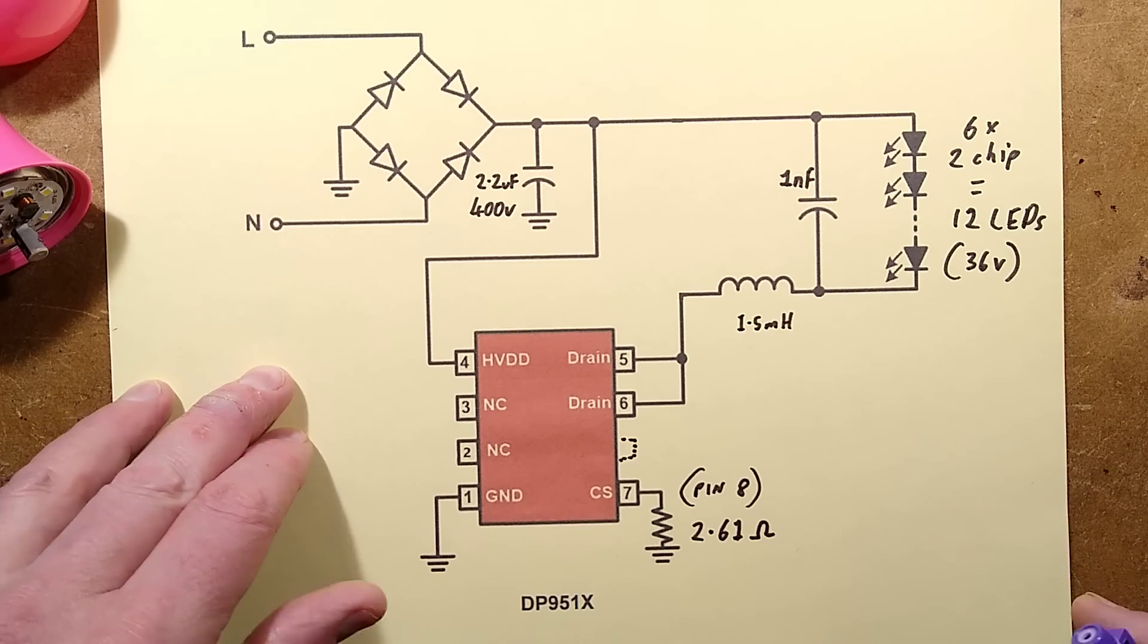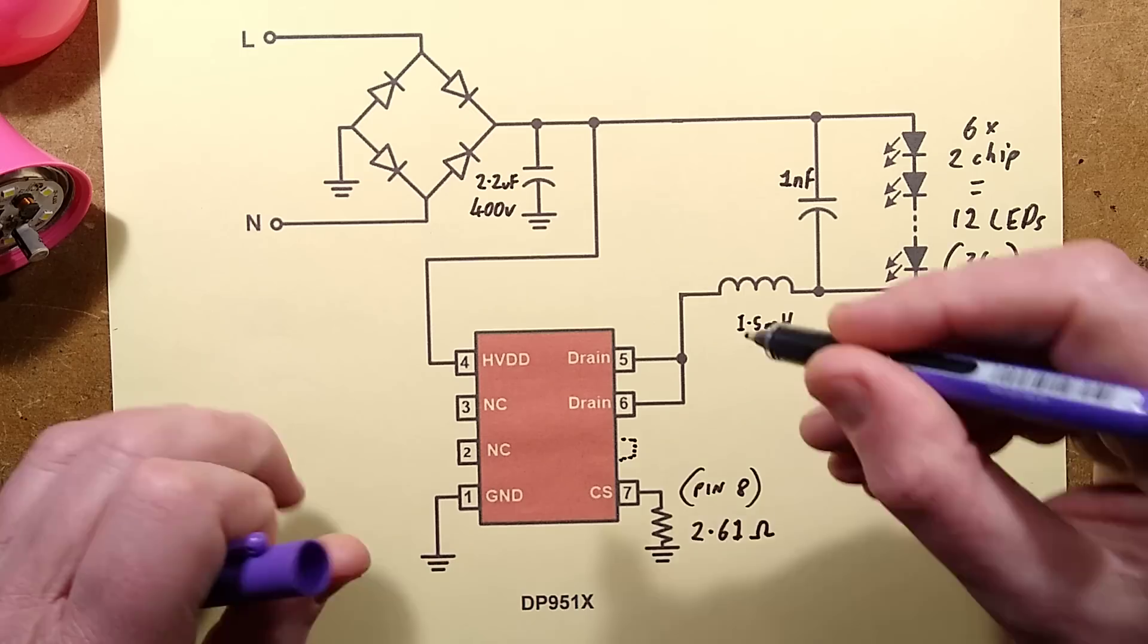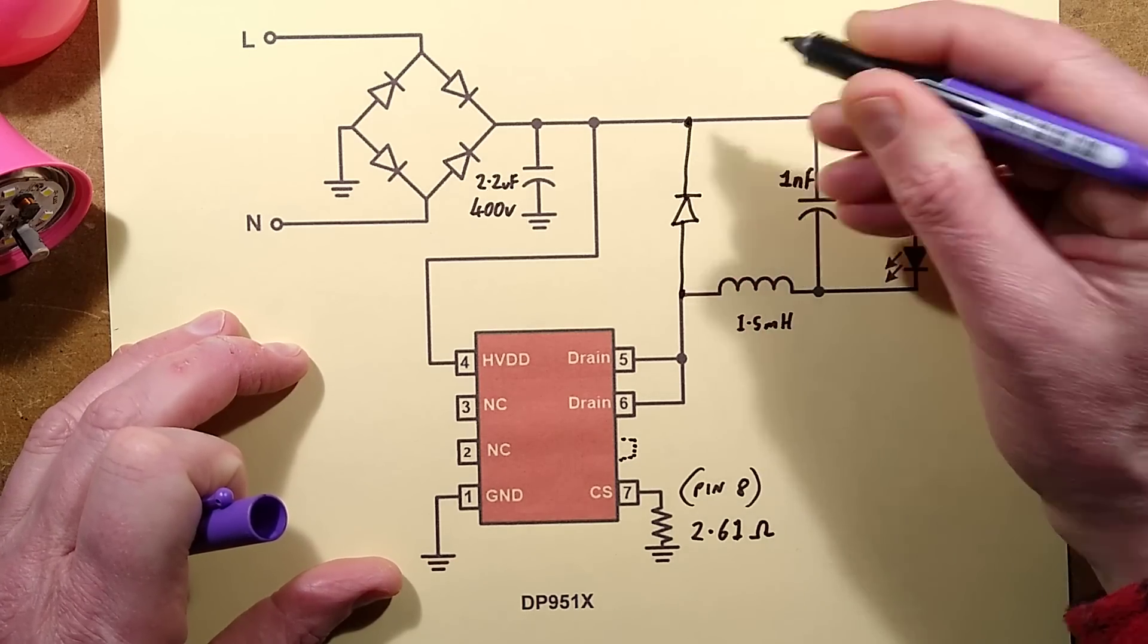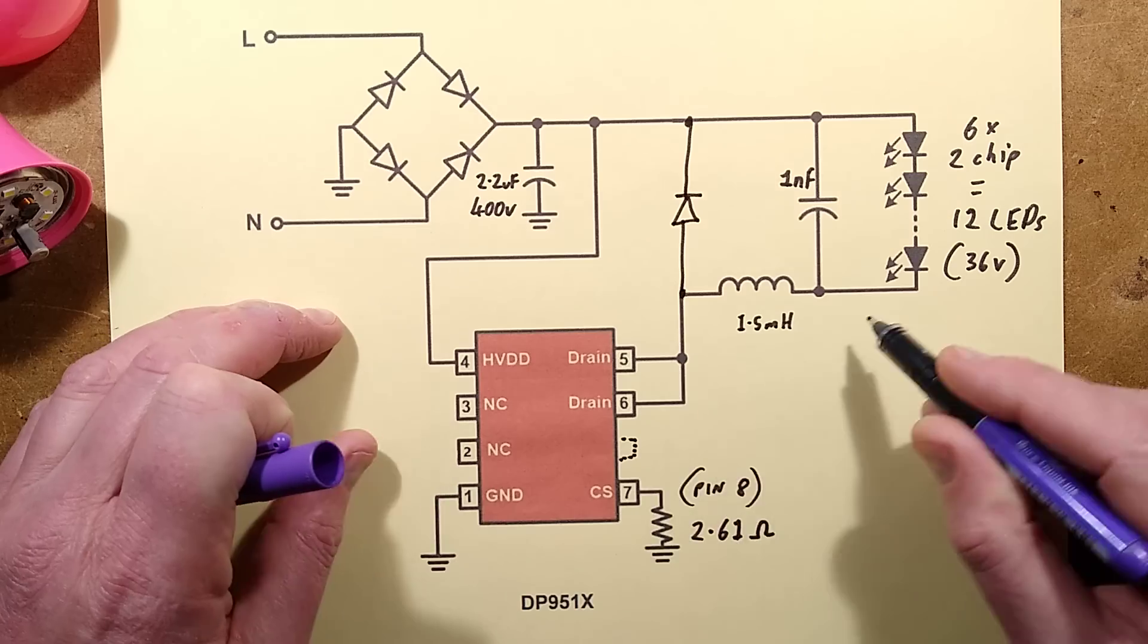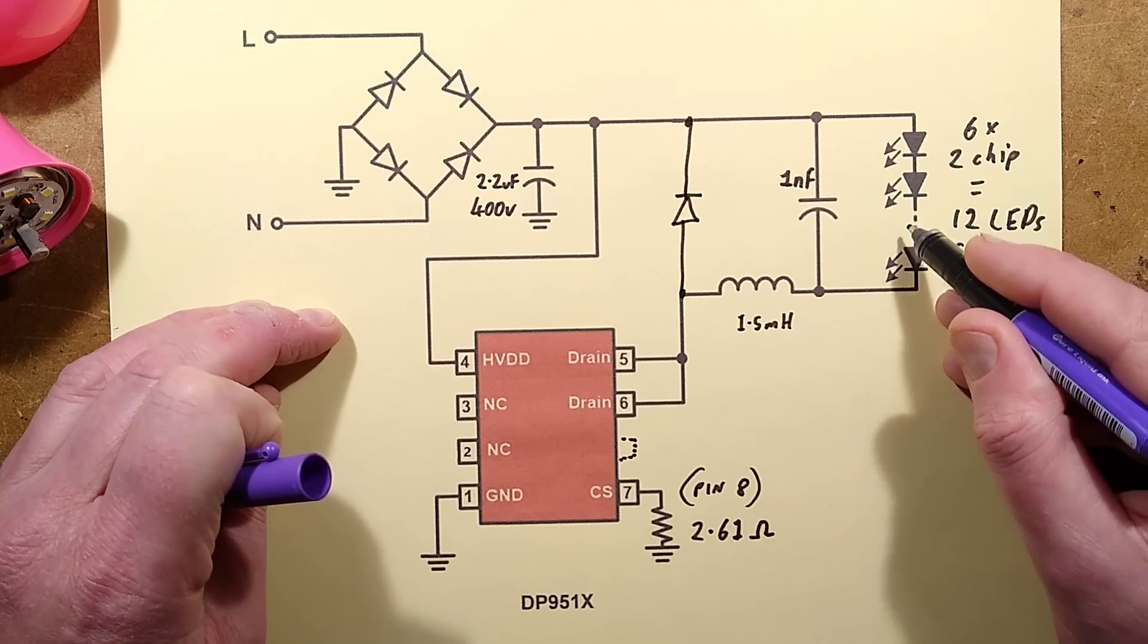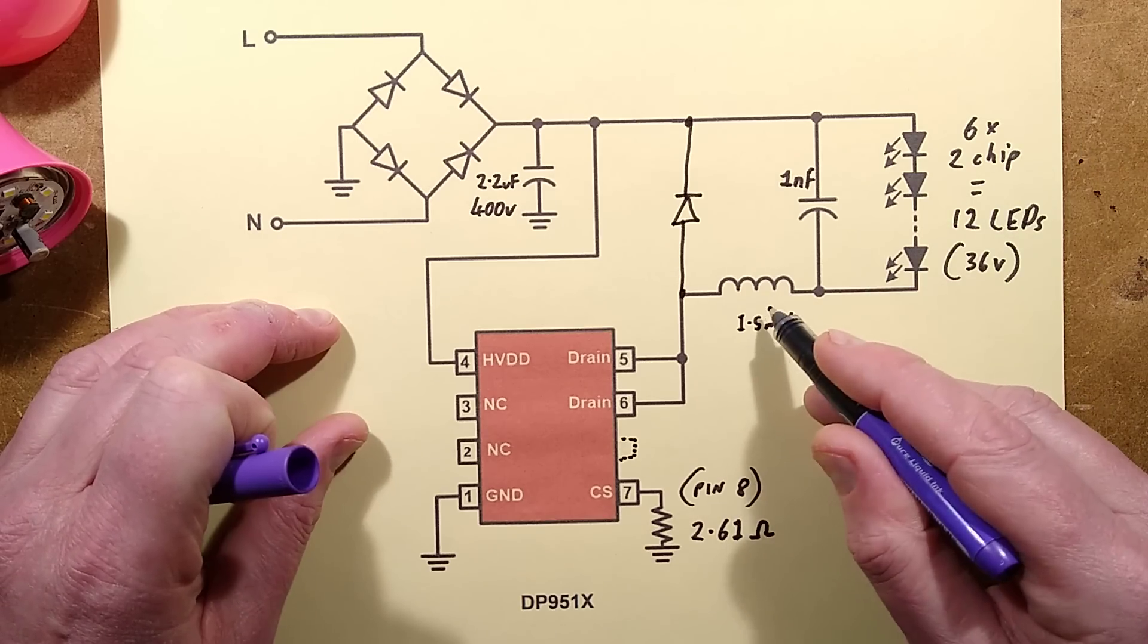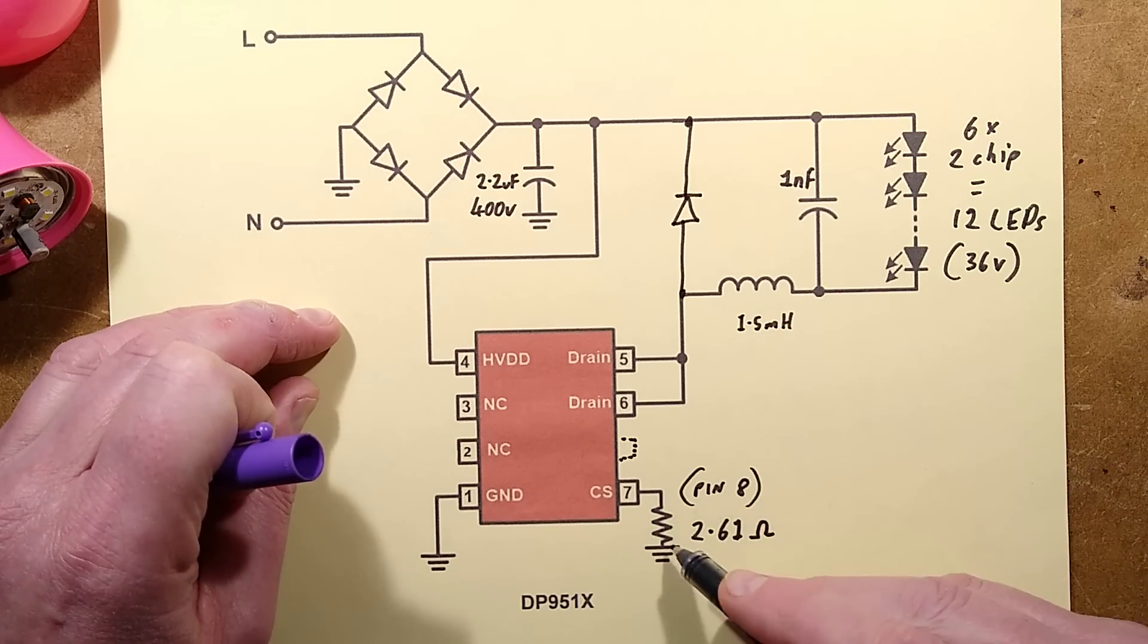Now normally I would expect a circuit like this to have what's called a freewheel diode and the freewheel diode would normally be mounted between here. The way this works is that the chip will turn on its MOSFET and current will start flowing through the LEDs but be limited by the inductor. Although it's a very small inductor it's still significant at the frequencies of operation. So it will limit the current to a degree but the current will gradually increase until it's sensed at a certain threshold by this 2.61 ohm resistor and the voltage that develops across it.